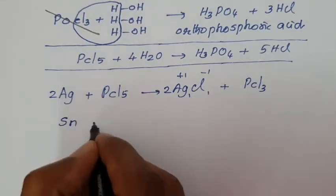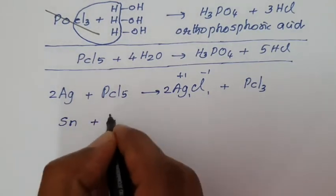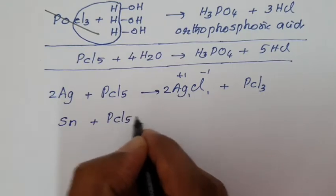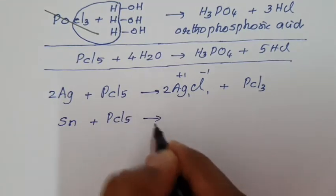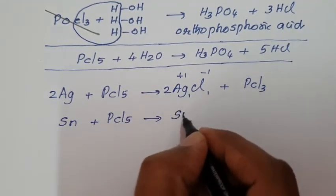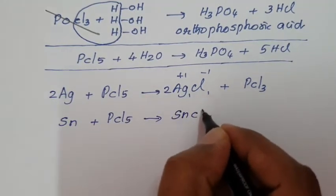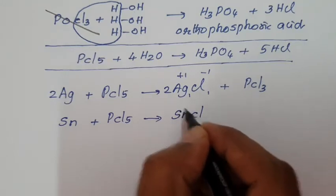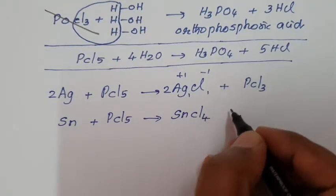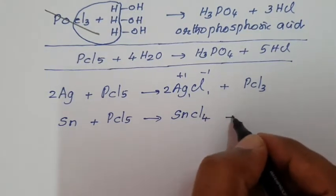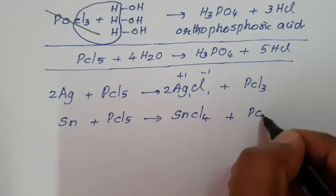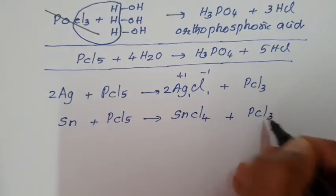Tin (Sn) undergoes chlorination with phosphorus pentachloride. Sn undergoes chlorination to give stannic chloride (SnCl₄, Sn⁴⁺) with the loss of PCl₃.